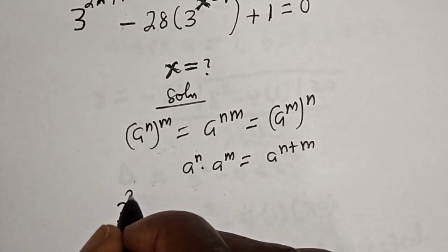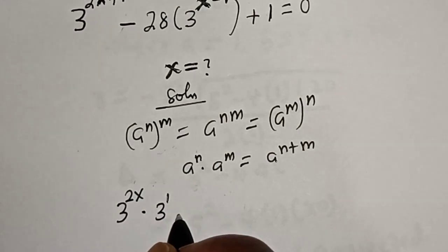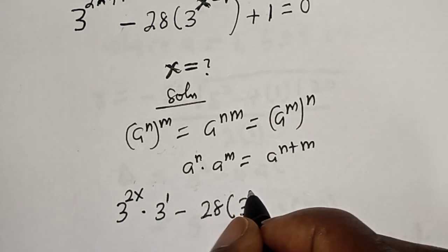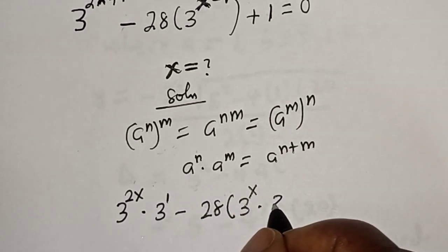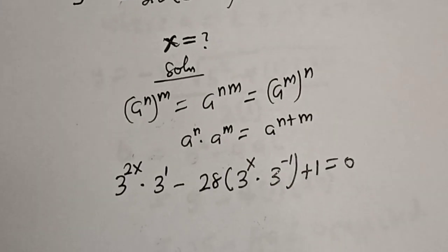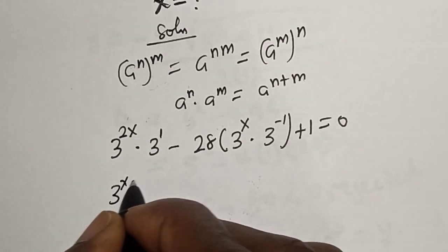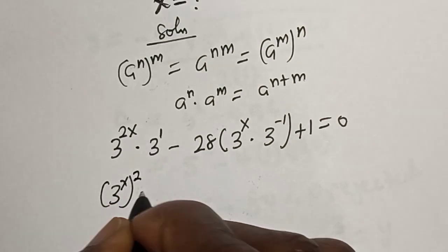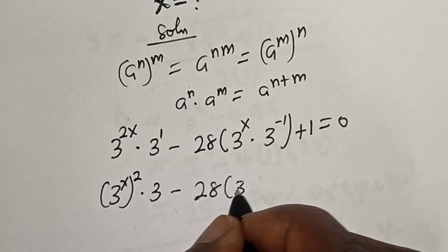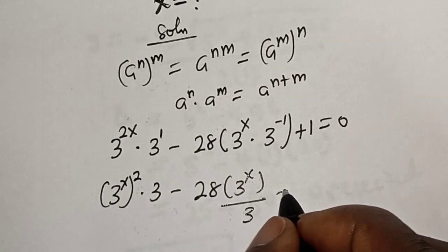3 raised to power 2s multiplied by 3 raised to power 1, minus 28 bracket 3 raised to power s multiplied by 3 raised to power minus 1, plus 1, is equal to 0. Then this simplifies as 3 raised to power s, squared, multiplied by 3, minus 28 bracket 3 raised to power s over 3, plus 1.